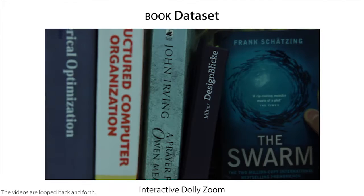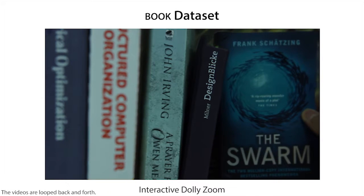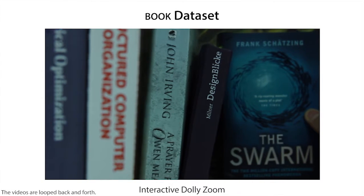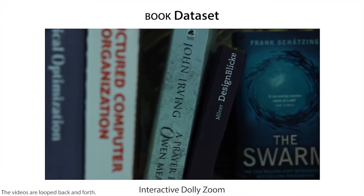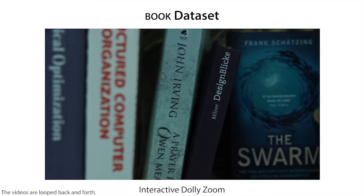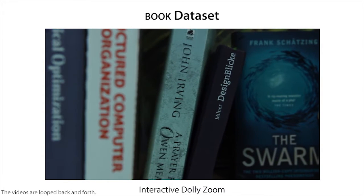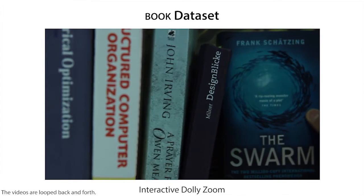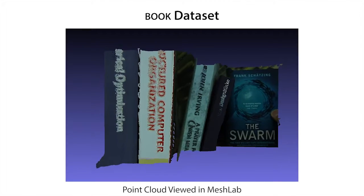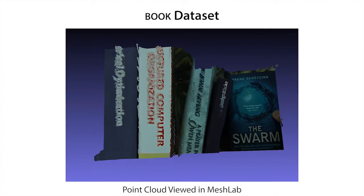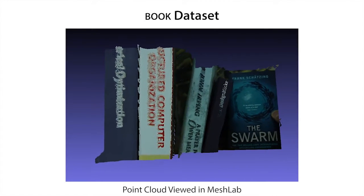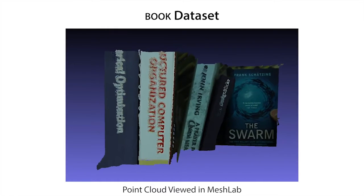We now show a virtual dolly zoom, where the camera moves closer to the books while keeping the size of the middle book constant. The key ingredient for this effect is our reconstructed all-on-focus RGBD video, one frame of which we visualize here as a point cloud.